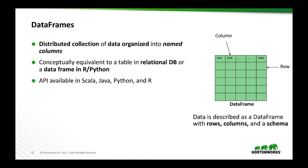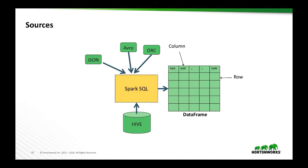DataFrames are a distributed collection of data organized into named columns. Conceptually, they are equivalent to a table in a relational database or a DataFrame in R or Python. The API is available in Scala, Java, Python, and R, making it very powerful. They have rich optimizations, making them significantly faster than RDDs. The Spark SQL module allows you to create a DataFrame from a variety of sources — JSON, XML, Avro, ORC, Parquet, Hive, and HBase — and there are many other sources you can connect to via an external plugin.